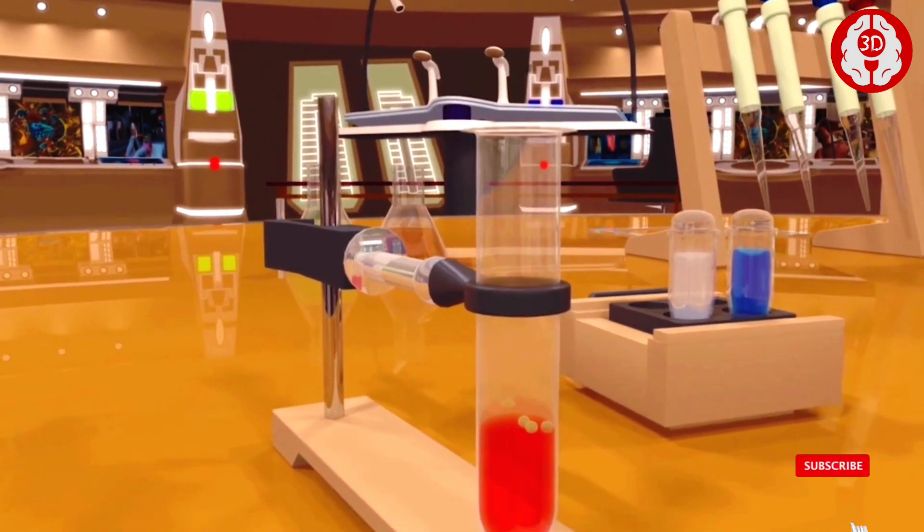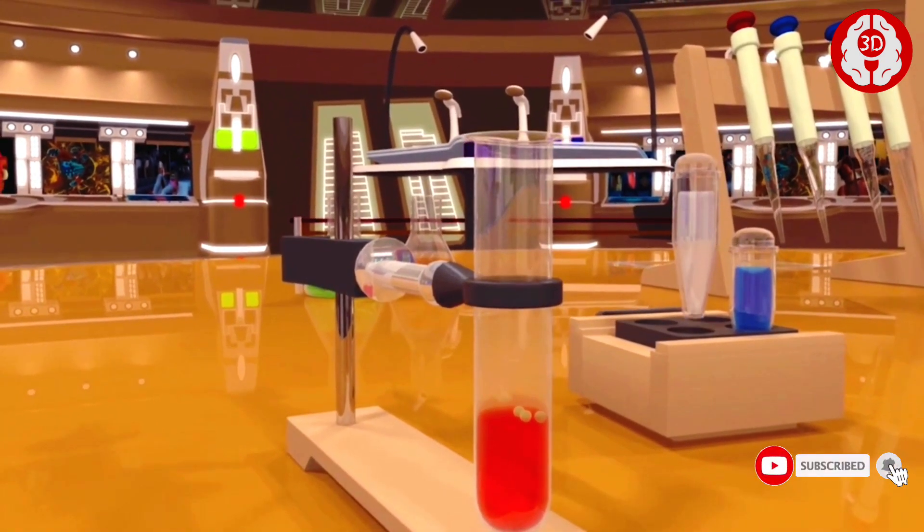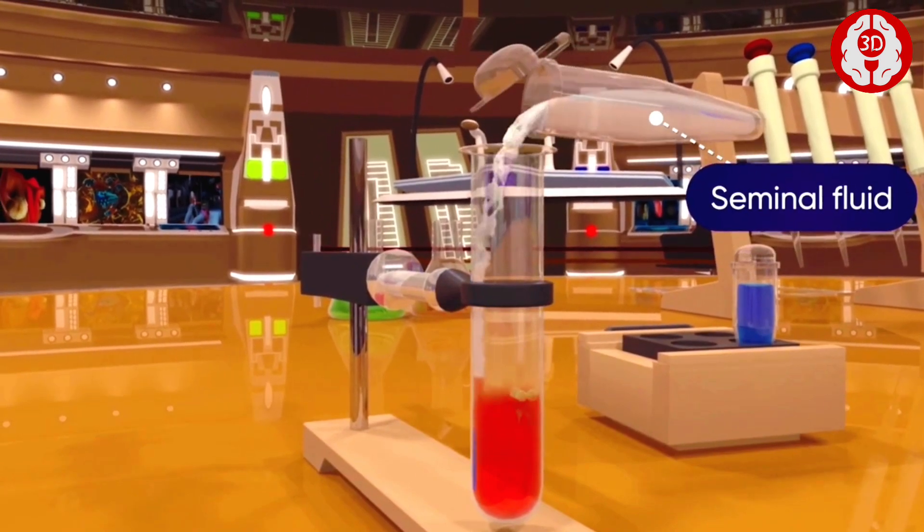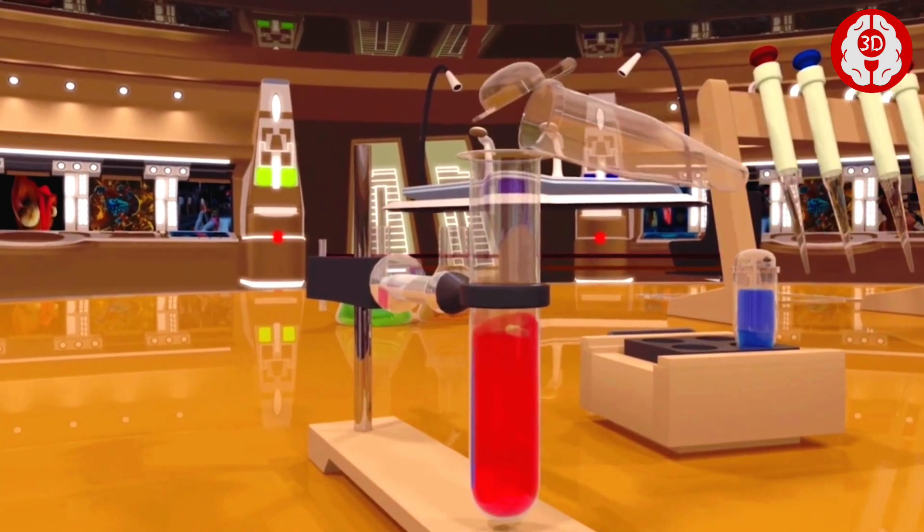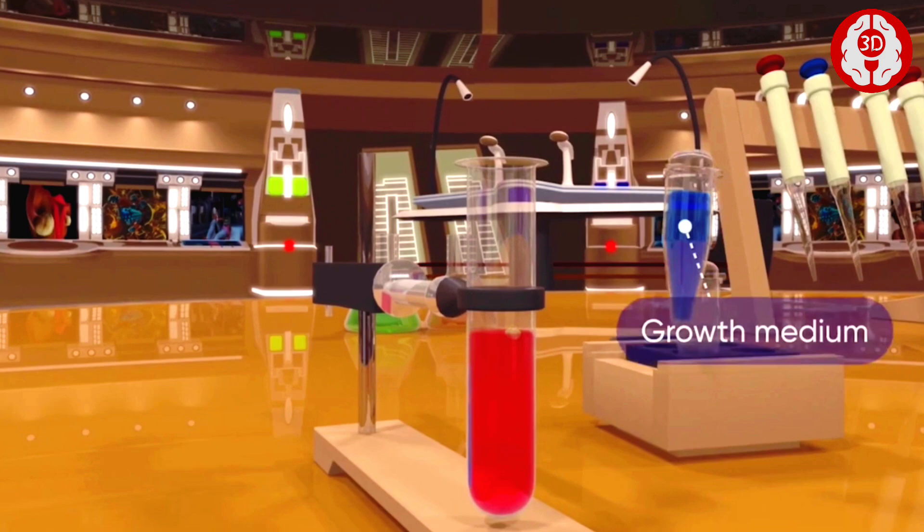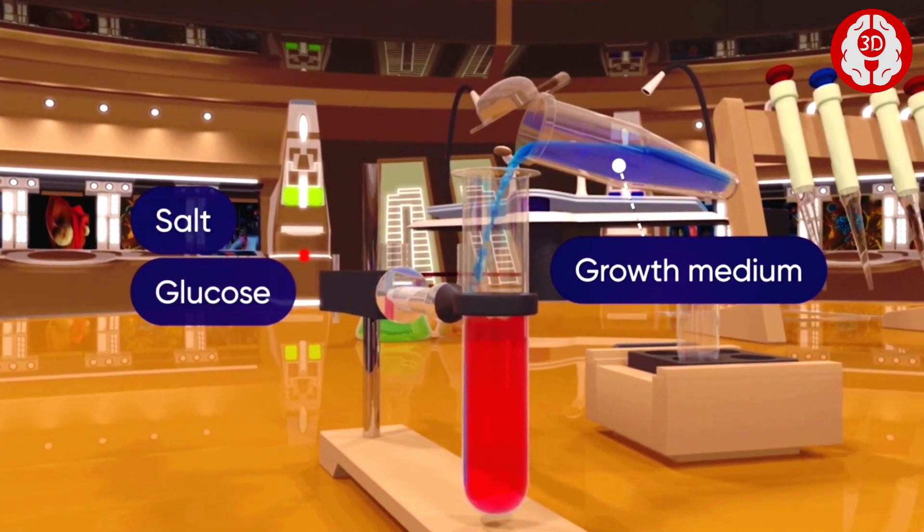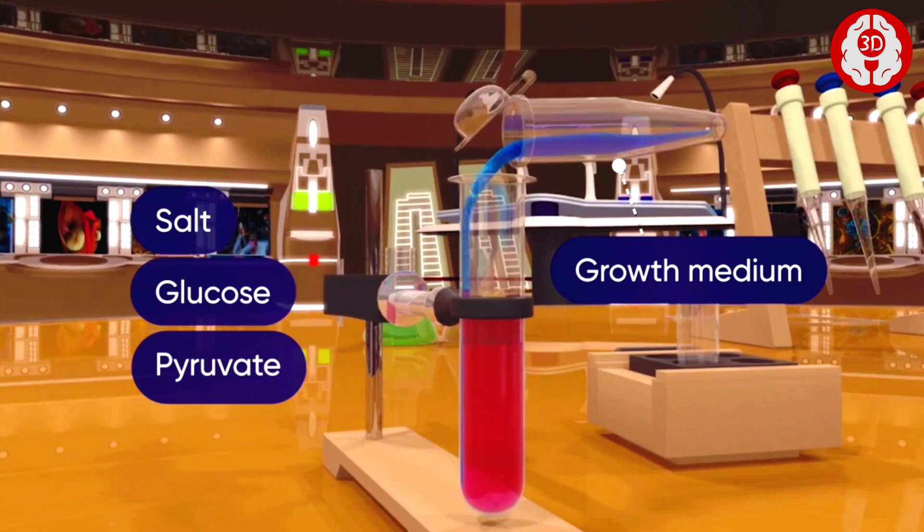The harvested ova are placed in a test tube and the seminal fluid collected from a male is mixed with them. The growth medium containing salts, glucose and a chemical called pyruvate is added.